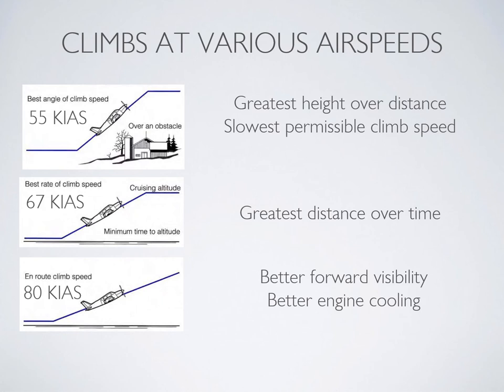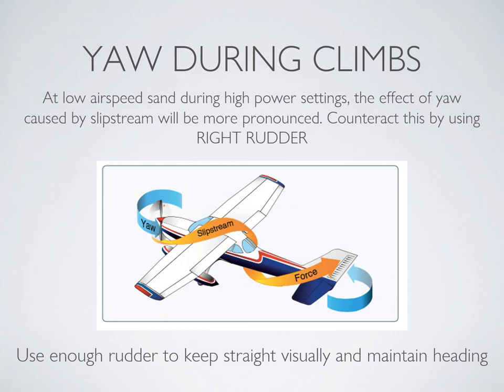In climbs at low airspeeds, you'll probably notice a lot of yaw, so get ready to use your right rudder to counteract it. At high power settings and low airspeeds, the effect of yaw caused by slipstream will be more pronounced. Counteract this in your climbs by adding right rudder — just enough to keep straight visually and maintain heading.